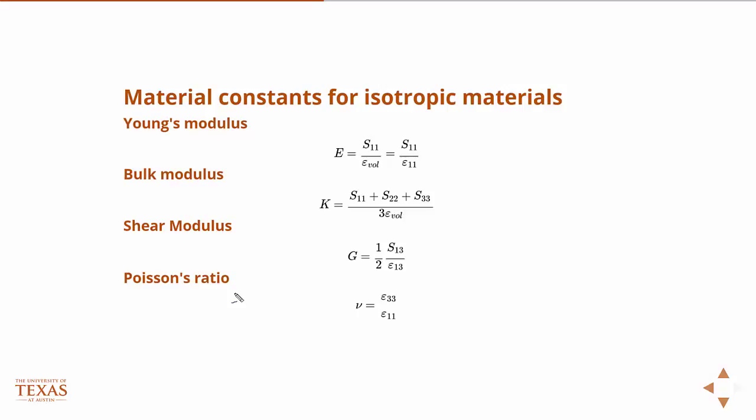So some material constants that we're familiar with as a function of this strain tensor. We've already defined stress previously. Now we have a notion of strain, and we can come up with some of these material constants from that. So our typical Young's modulus - we have a bar, and we apply stress to the end of it, and it causes some strain. But the stress is, the only stress we're applying is uniaxial.